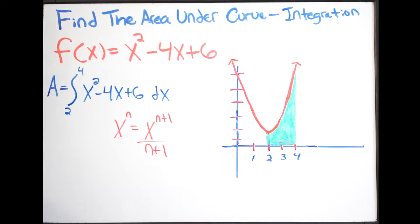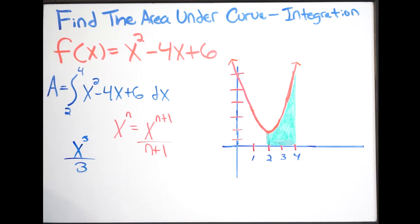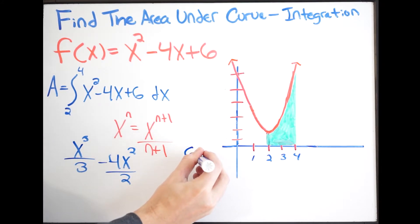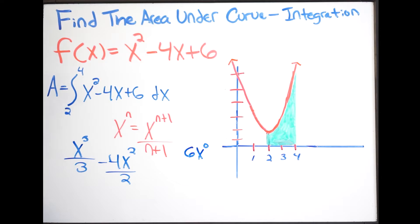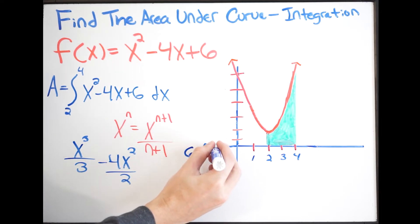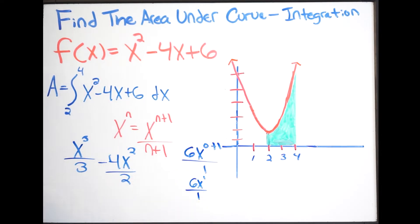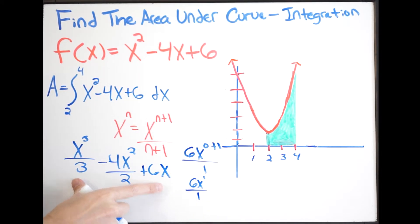So let's go ahead and find the anti-derivative. We're going to get x to the third all over 3, then minus 4x squared all over 2. For the constant term, remember we can rewrite 6 as 6x to the 0 power. When we find the anti-derivative, we add 1 to the exponent, so it becomes 6x to the first power over 1, which is simply plus 6x.